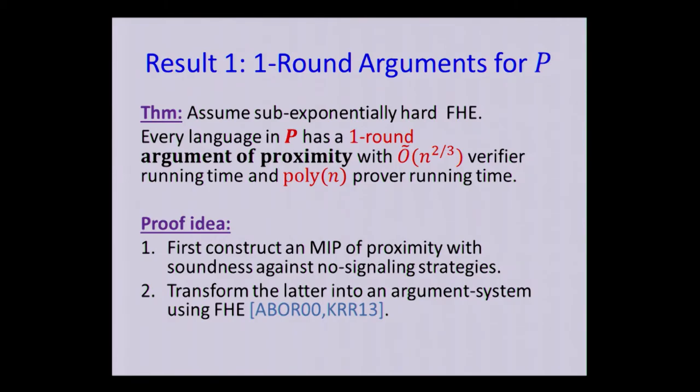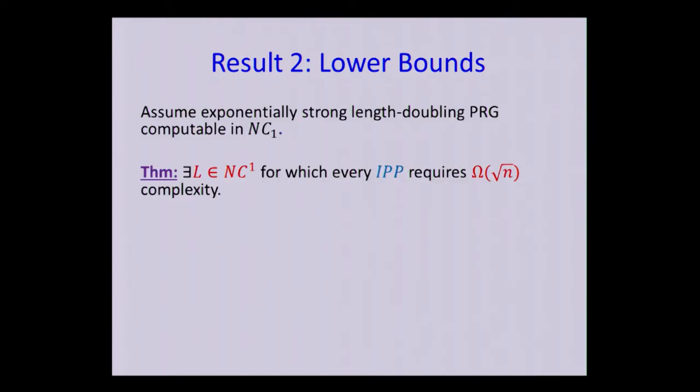The second result is this lower bound that I mentioned. In fact, it's going to be two lower bounds. And here we're also going to have a cryptographic assumption, which I don't see why... I see why our proof needs it, but I don't see why for the result it would be needed, and I think it's very interesting to try to get rid of this assumption. Regardless, the assumption is the following. So we're assuming an exponentially strong length-doubling cryptographic PRG, which is computable in NC1.